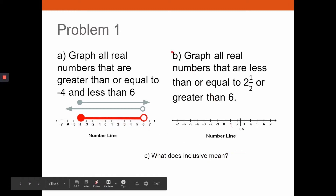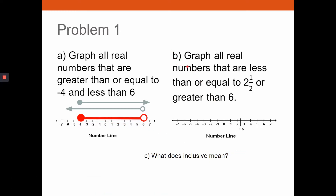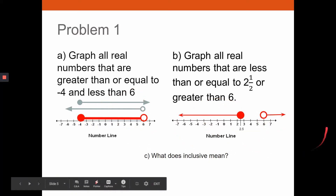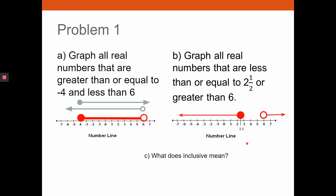Problem 1b: graph all numbers less than or equal to two and a half OR greater than six. OR is less restrictive — go straight to the number line. Closed circle at two and a half, shade left. Open circle at six, shade right. No overlap needed — include all numbers on both sides because it's an OR statement.